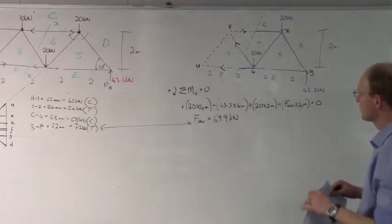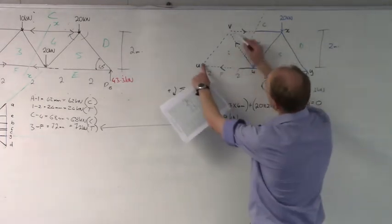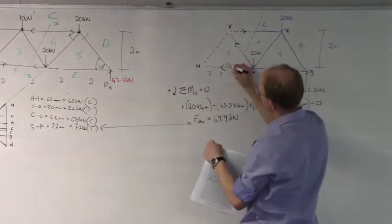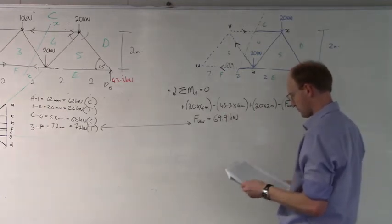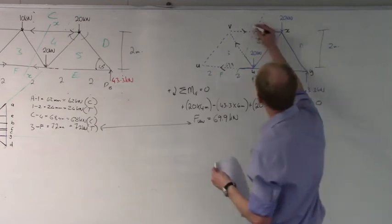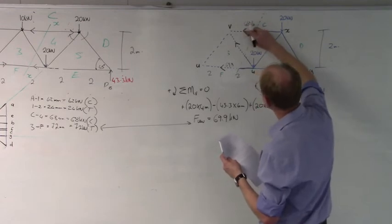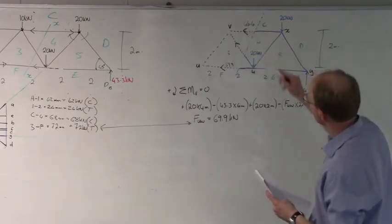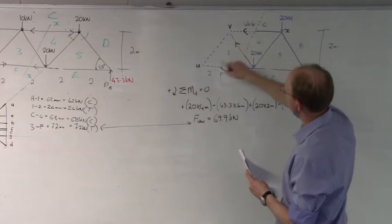The only difficult thing about the last one is solving this force here. The problem is the perpendicular distance. We've solved one force at 69.9. If you solve the force at the top, that one is 66.6. And this one was negative, so it's actually going in the opposite direction. If you get a negative answer, you know your assumed force direction was wrong. The difficulty in solving force VW is finding the perpendicular distance.